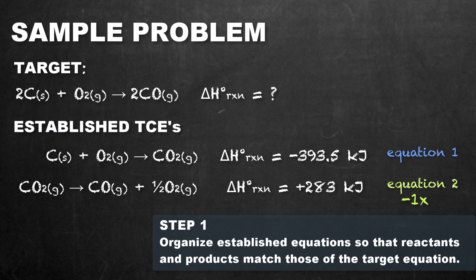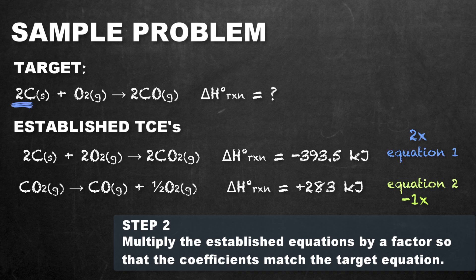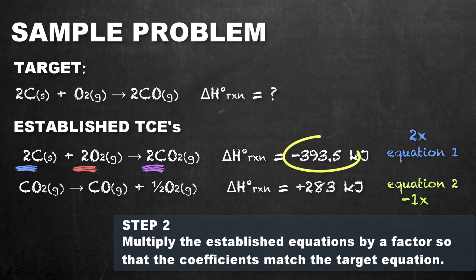Now that we have the appropriate substances on each side, we check the coefficients to ensure the overall equation is balanced. Equation 1 has only one mole of carbon, but our target requires two, so we double equation 1. This gives us two moles of carbon, two moles of oxygen, and two moles of carbon dioxide. Just as we had to reverse the sign for equation 2, we also have to double the enthalpy change for equation 1.